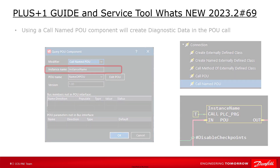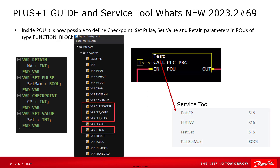Inside POU it is now possible to define checkpoint, set pulse, set value, and retain parameters in POUs of type function block via the new sections var checkpoint, var set pulse, var set value, and var retain. After this definition, the diagnostic data are available in the Service Tool listed with the instance name followed by the variable name.